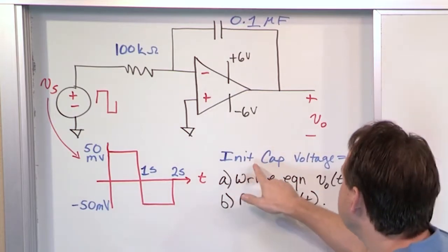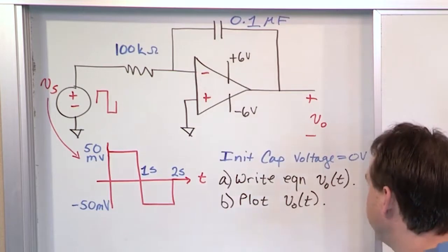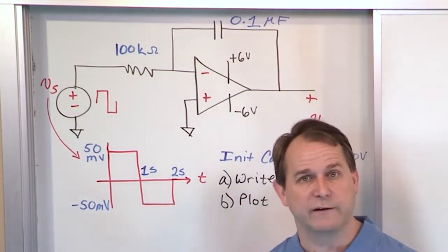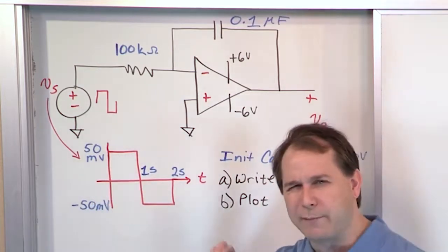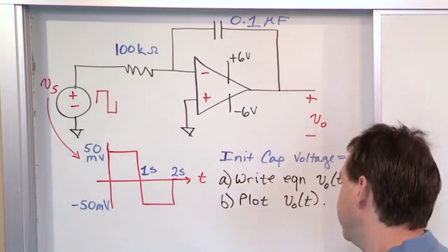We're also told that the initial capacitor voltage, which is the voltage across this capacitor, is zero volts. This is another way of saying the initial output voltage of this amplifier at time zero when we start, right over here at zero, right before we go up, is there's no output, there's no charge, so that's zero.